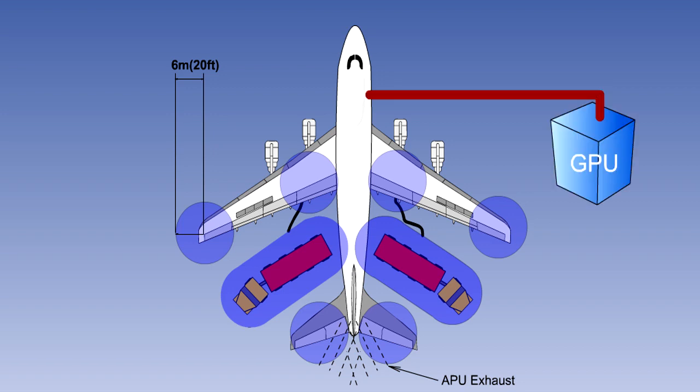Electrical ground power units or GPUs should be located as far away as practically possible from the fueling zones and not be connected or disconnected while fueling is in progress. Only authorised personnel and vehicles should be allowed within the refueling zones and their number should be kept to a minimum.